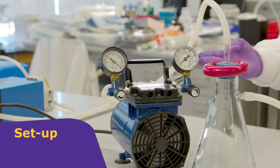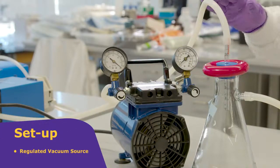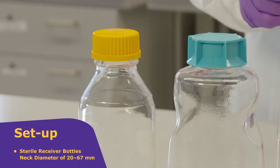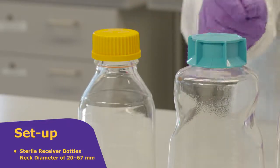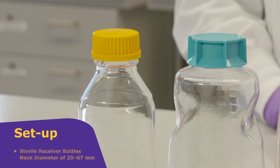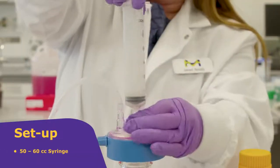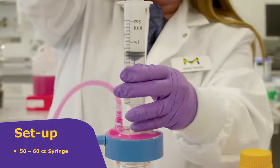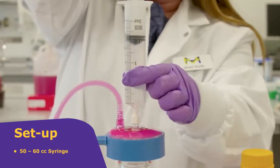Setup. You will need a regulated vacuum source with tubing, sterile receiver bottles or vessels with an inner neck diameter of 20 to 67 millimeters, and a 50 to 60 cc syringe can be used to reprime in the event of air locking.